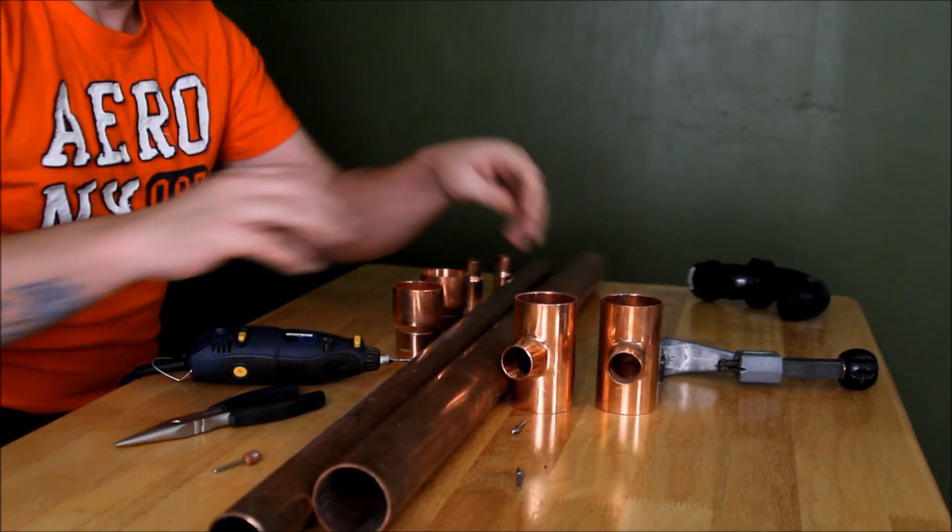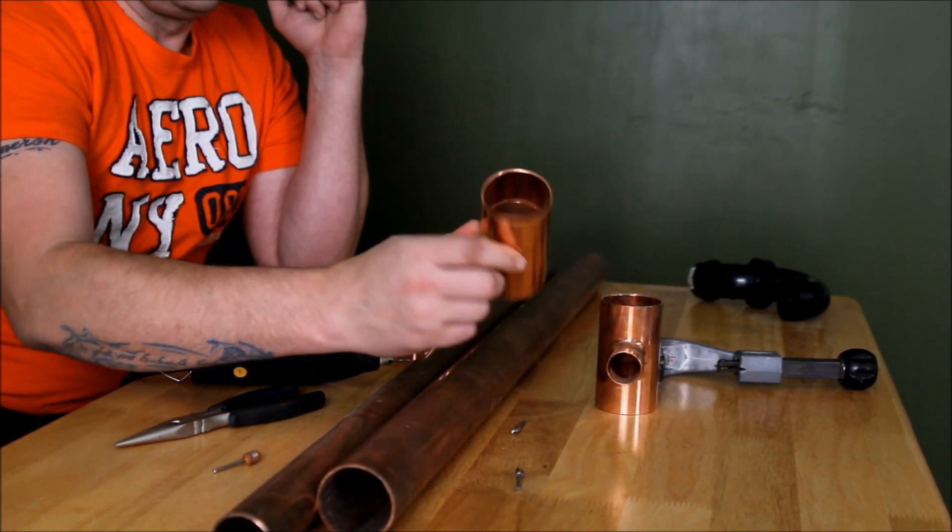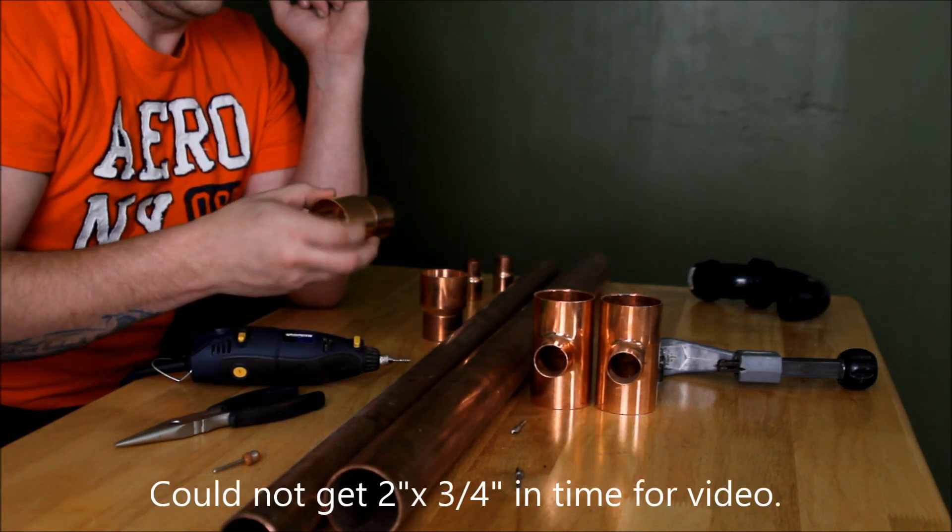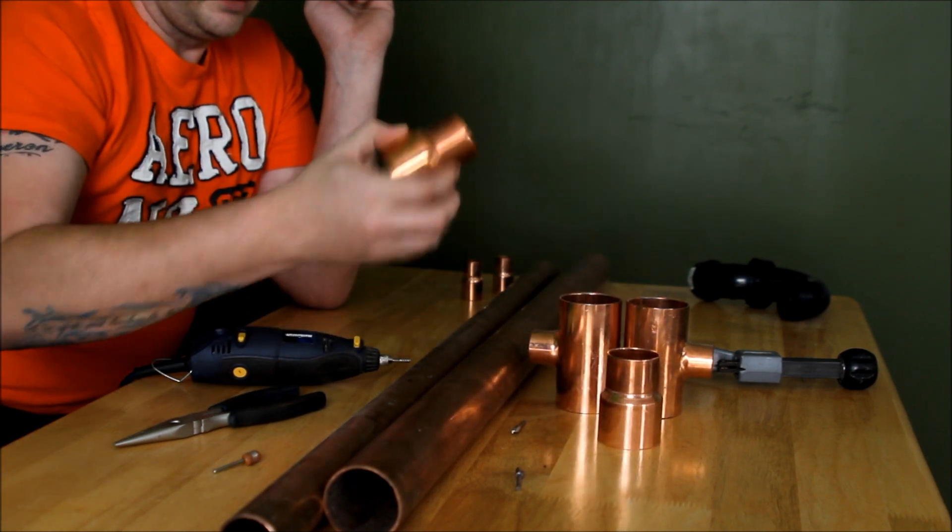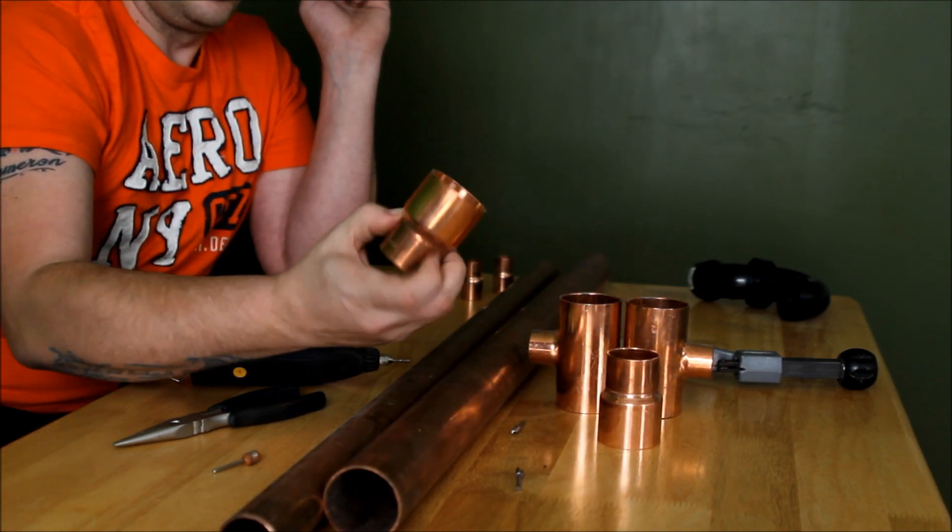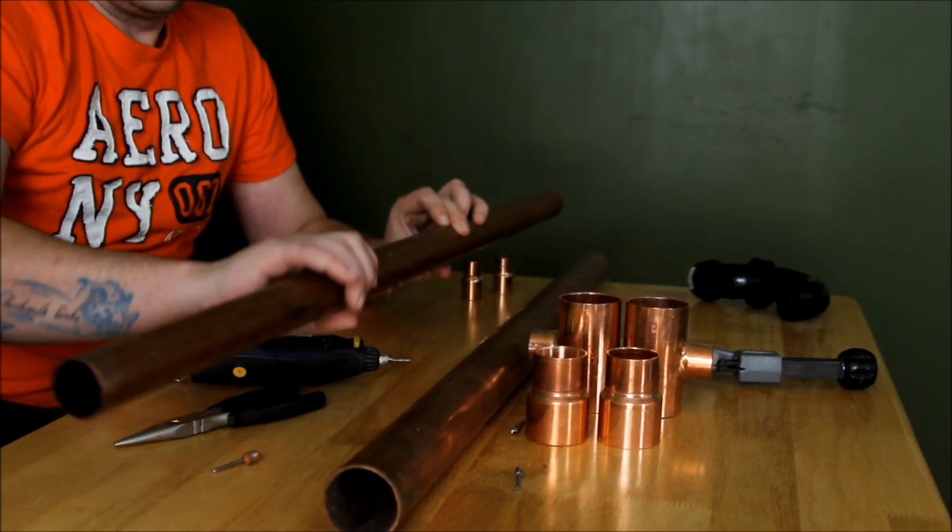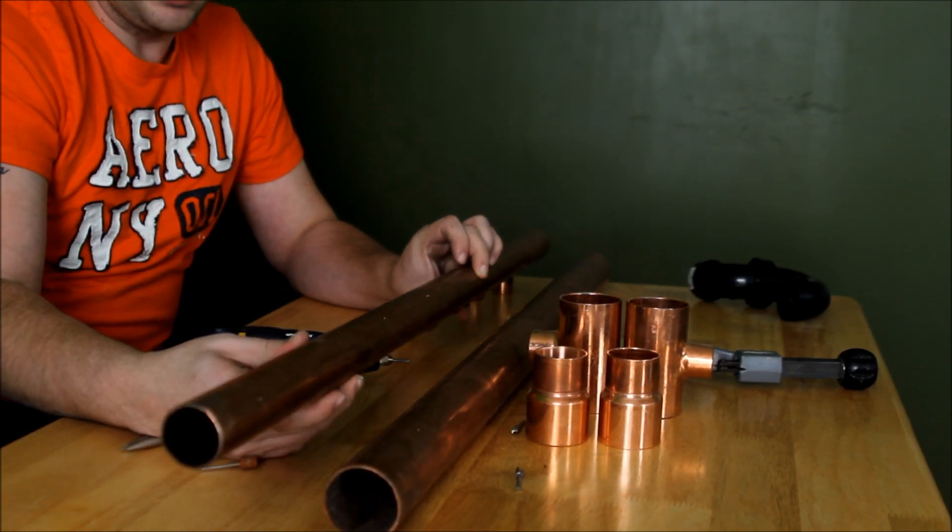What we're starting off here with is two, two inch by one inch reducing tees. I got two reducing bushings, two inch by inch and a half. I've got two pieces of pipe. Since we're dealing with domestic pressure, this is type M and this is type M also.